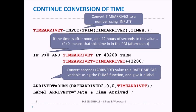We continue with the conversion of time by taking time_arrive2 and converting it using the INPUT function with the TIME8. format, arriving at a value called time_arrive_t. Then we adjust time_arrive_t according to whether or not it's PM. If it's PM, we need to add 43,200 seconds to make it the right time. We check if P is not equal to 0 and time_arrive_t is less than 43,200 — meaning it's before noon — and then add 43,200 seconds to the time.